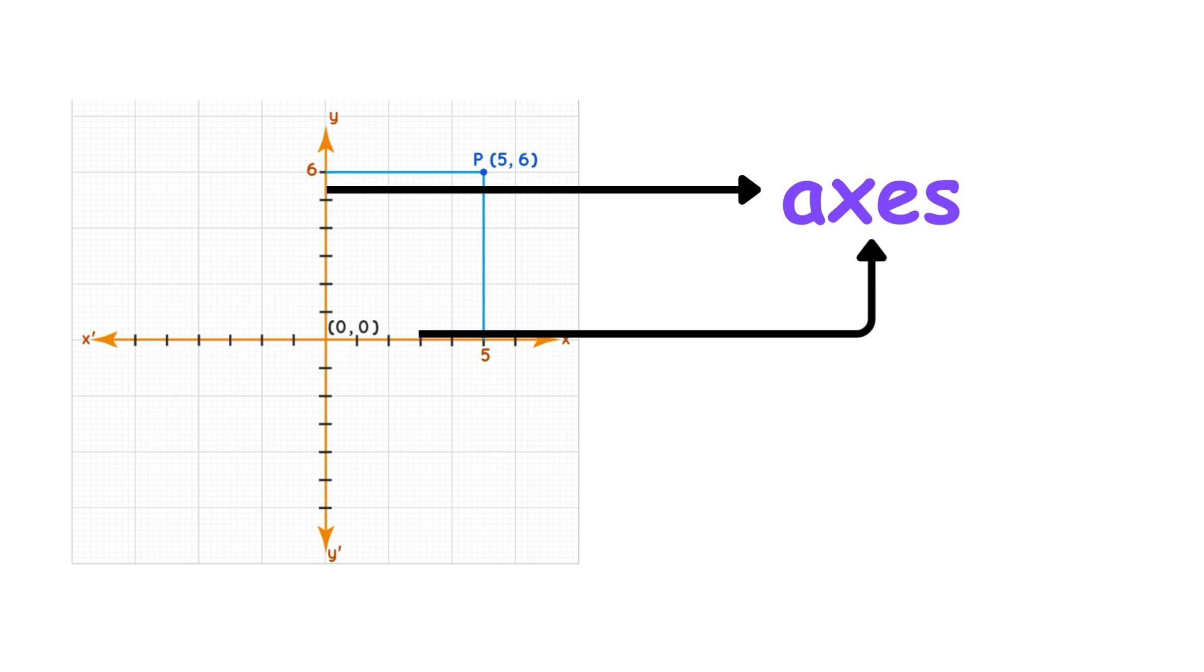that intersect at a point called the origin. The horizontal line is the x-axis, and the vertical line is the y-axis. On the x-axis, right is positive and left is negative. On the y-axis, up is positive and down is negative.